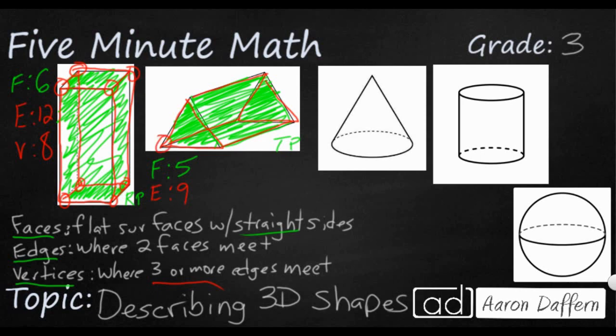And for our vertices, we're just going to circle those corners. Three in the front, three in the back. So that would be six vertices. So that's how we can describe a rectangular prism and a triangular prism.